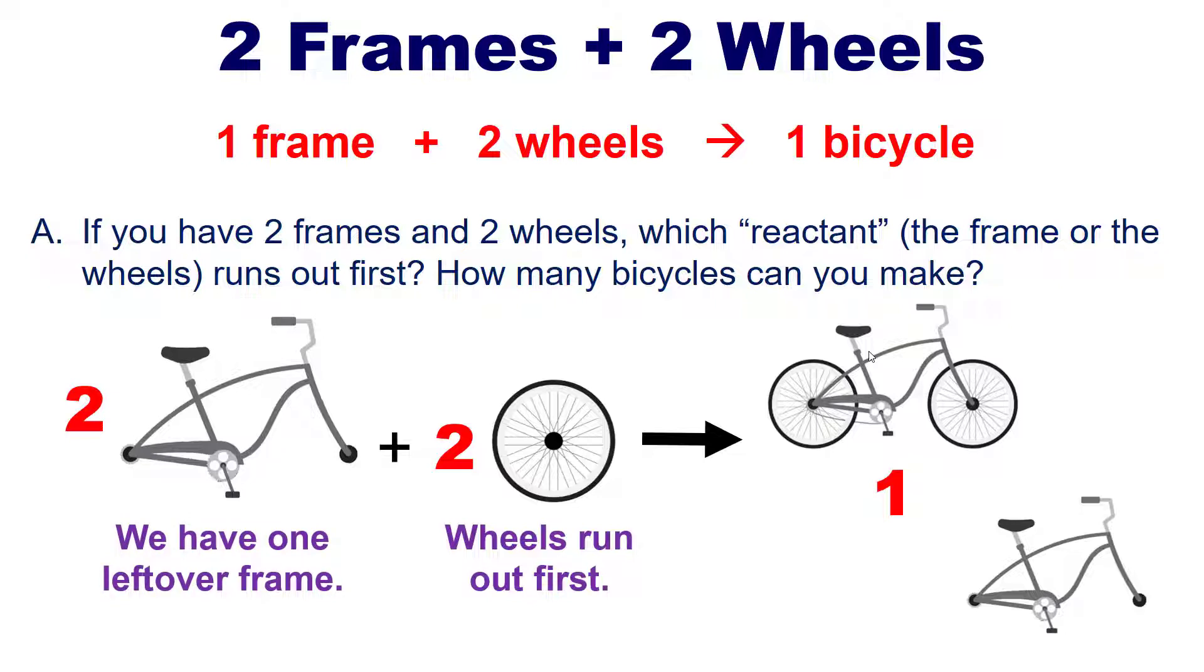We would say in this scenario that the wheels are the limiting reactant, the reactant that runs out first, and the frames in this scenario are added in excess. It stands to reason too that you would run out of wheels first because it requires twice as many wheels to make a bicycle as it does frames.